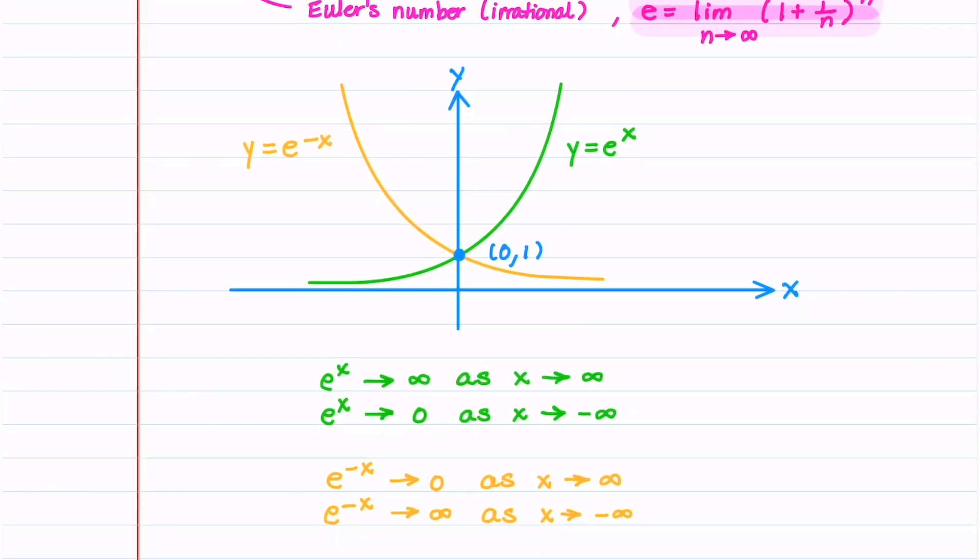Let's now take a look at the graphs of the functions e to the x and e to the minus x. The function e to the x grows exponentially and the function e to the minus x decays exponentially. When you study calculus, you're often looking at the end behavior of both of these functions. One easy way to remember the end behavior is to actually graph the functions. e to the x goes to infinity as x goes to infinity and e to the x goes to 0 as x goes to minus infinity. Let's now look at e to the minus x. It's going to be just the opposite. e to the minus x is going to go to 0 as x goes to infinity and e to the minus x is going to go to infinity as x goes to minus infinity.